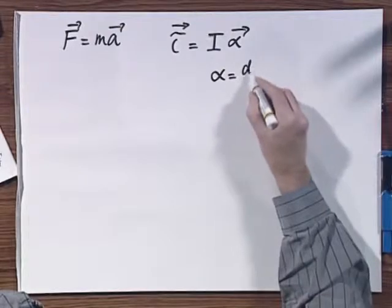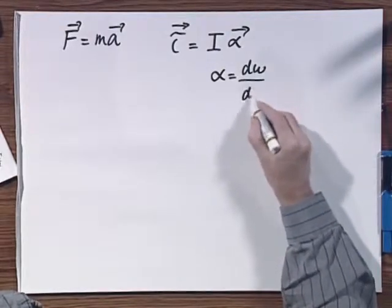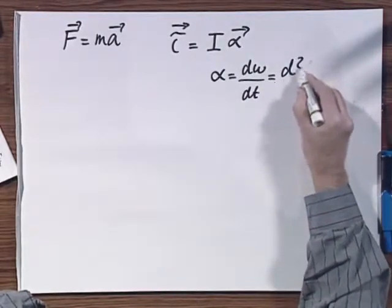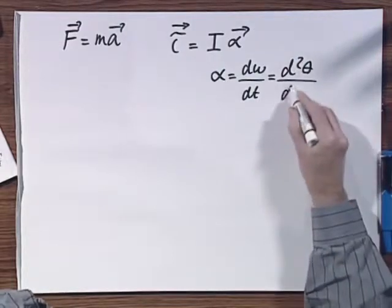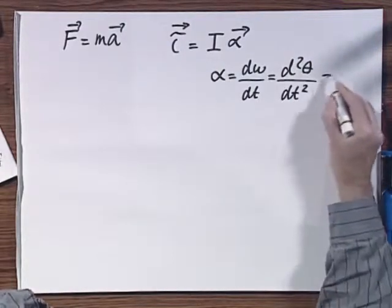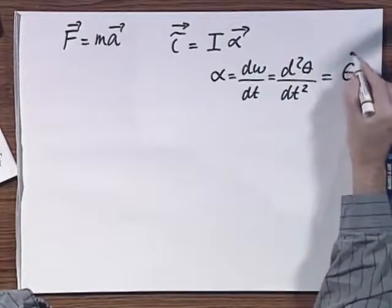Alpha is dω/dt, and omega is dθ/dt, and for which I will write often θ dot.